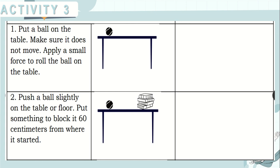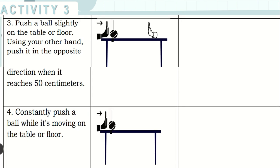Number one: Put a ball on the table. Make sure it does not move. Apply a small force to roll the ball on the table. Next, push a ball slightly on the table or floor. Put something to block it 60 centimeters from where it started. Third, push a ball slightly on the table or floor. Using your other hand, push it in the opposite direction when it reaches 50 centimeters.